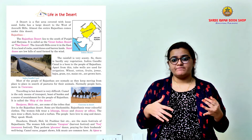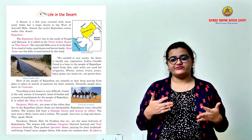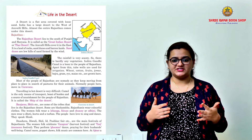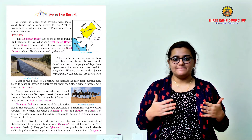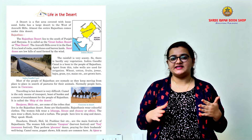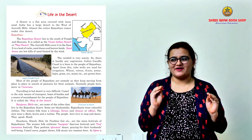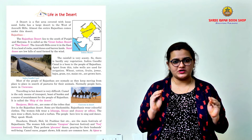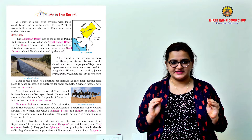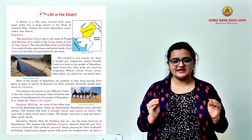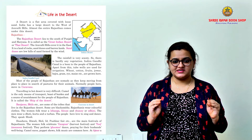Wheat, cotton, fruits, jowar and bajra, gram, rye, maize, etc. are grown here. With the available little water resources near them, they grow these crops.